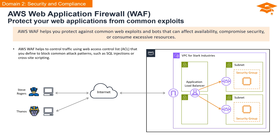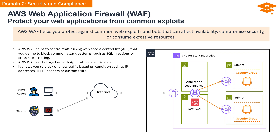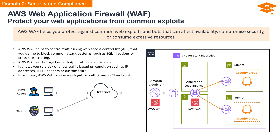AWS WAF empowers you to regulate traffic by employing a web access control list defined by you, allowing the blocking of prevalent attack patterns like SQL injections or cross-site scripting for enhanced security. AWS WAF seamlessly integrates with the application load balancer and provides the capability to either block or allow traffic based on conditions such as IP addresses, HTTP headers, or custom URLs. Furthermore, AWS WAF collaborates seamlessly with Amazon CloudFront.